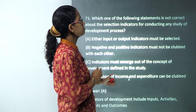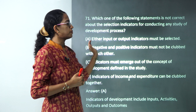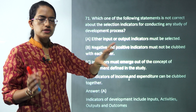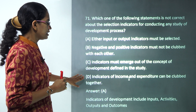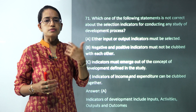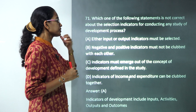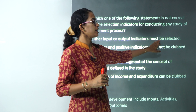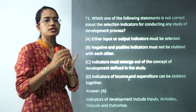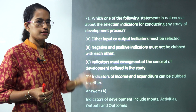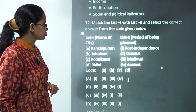This is a very interesting and important question about selection indicators for conducting a development process. Under development, we cannot club a positive and a negative indicator together. Indicators of income and expenditure can be clubbed together. However, the statement that 'either input or output indicators must be selected' is incorrect, because there are four categories — input, output, activity-based, and outcome-based — and you can select any of them. So option one is the incorrect choice.